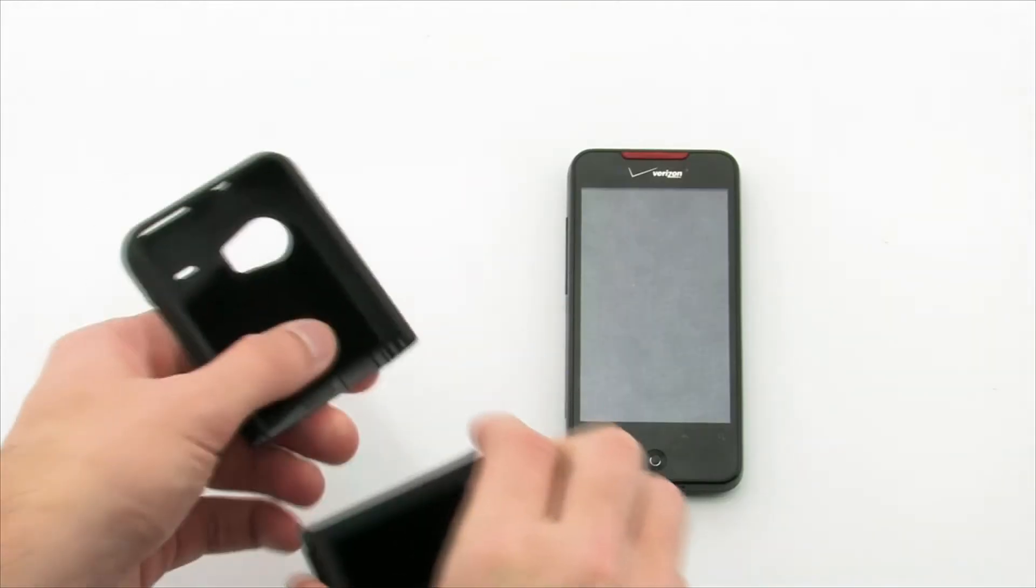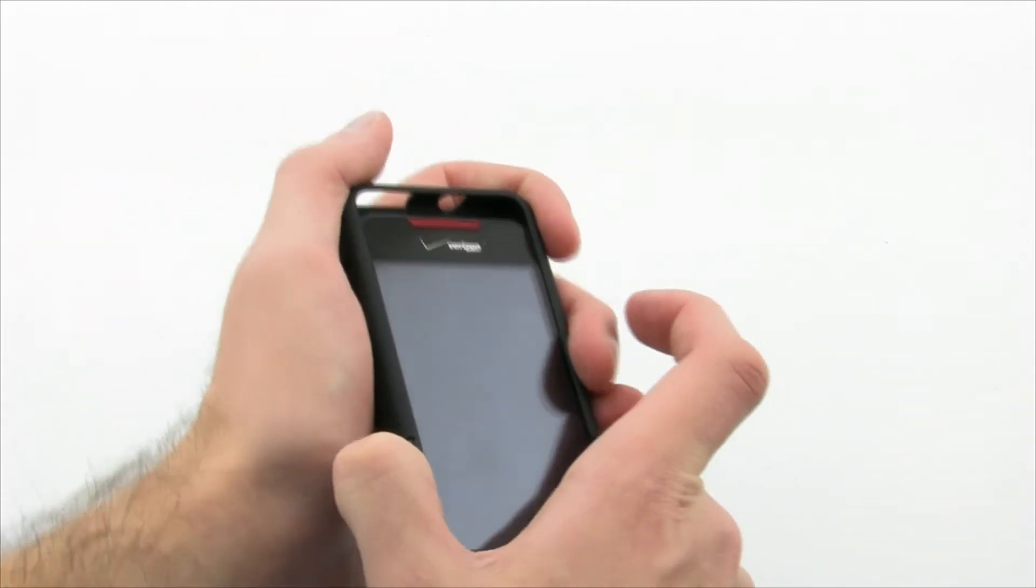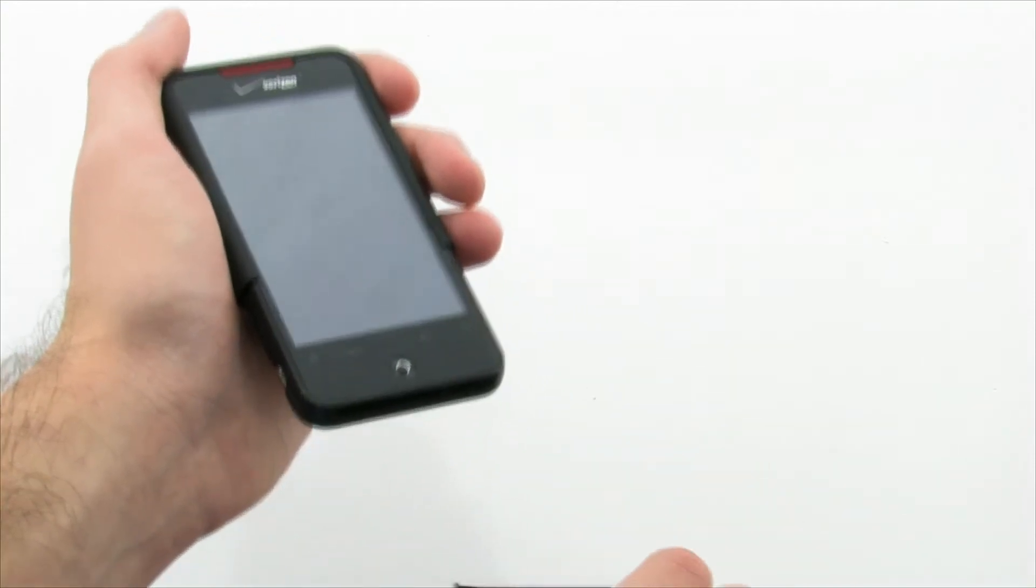To install the case, first install the surface case inner layer by sliding the top half of the case over the top of the device and covering the exposed area with the lower half of the case.